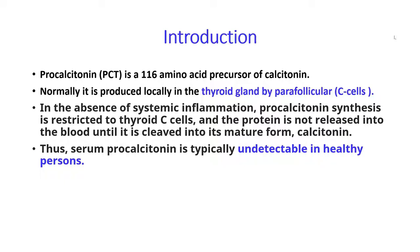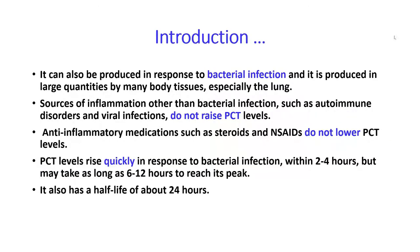What is procalcitonin? Procalcitonin is a 116 amino acid precursor of calcitonin. Normally procalcitonin is produced locally in the thyroid gland by parafollicular cells, which are also called C cells. In the absence of systemic inflammation, procalcitonin synthesis is restricted to thyroid C cells and the protein is not released into the blood until it is cleaved into its mature form, which is calcitonin. Thus, serum procalcitonin is typically undetectable in healthy persons.